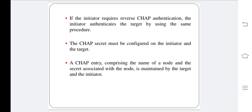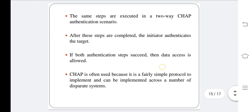If the initiator requires reverse CHAP authentication, the initiator authenticates the target using the same procedure. The CHAP secret must be configured on both the initiator and the target. The CHAP entry, comprising the name of a node and the secret associated with the node, is maintained by both the target and the initiator. The same steps are executed in a two-way CHAP authentication scenario. After these steps are completed, the initiator authenticates the target, and if both authentication steps succeed, data access is allowed. CHAP is often used because it is a fairly simple protocol to implement across a number of disparate systems.